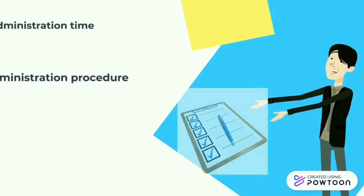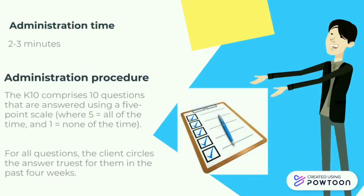For administration, the K10 comprises 10 questions that are answered using a 5-point scale. For all questions, the clients circle the answer that best fits them in the past 4 weeks.